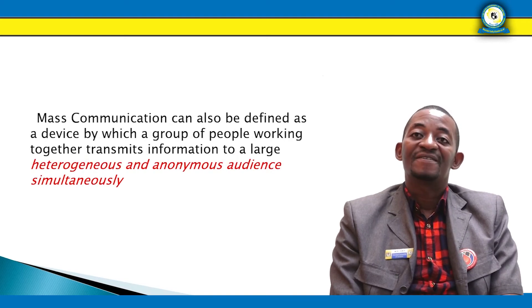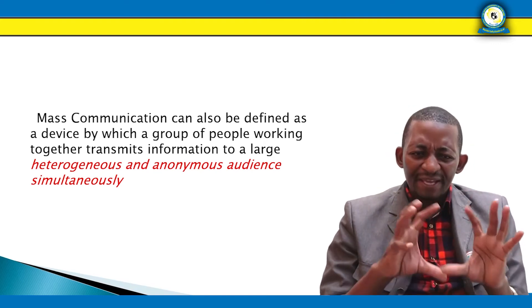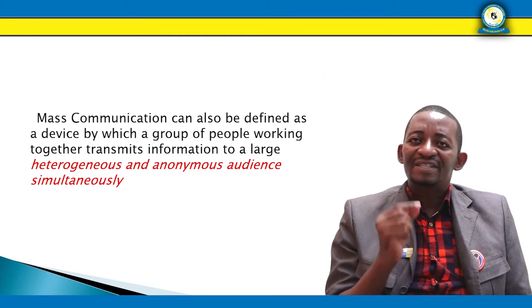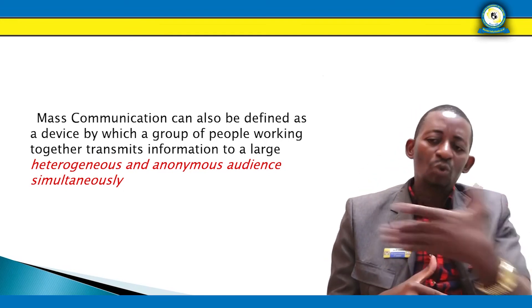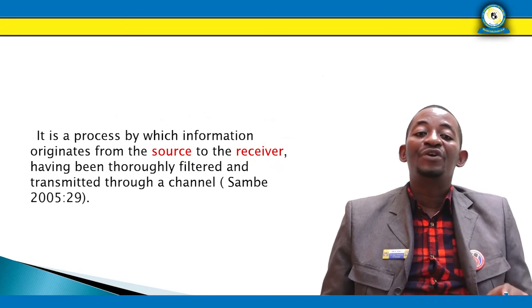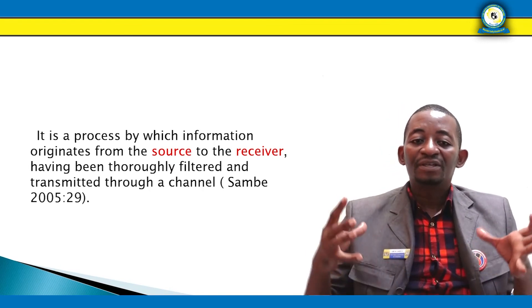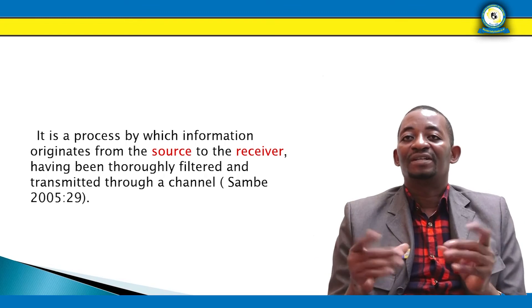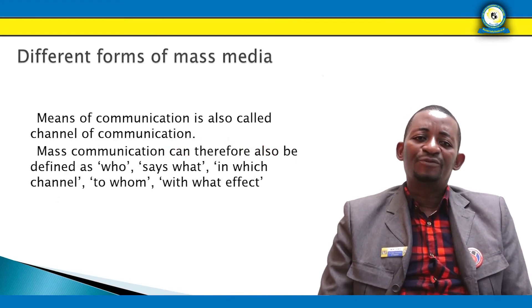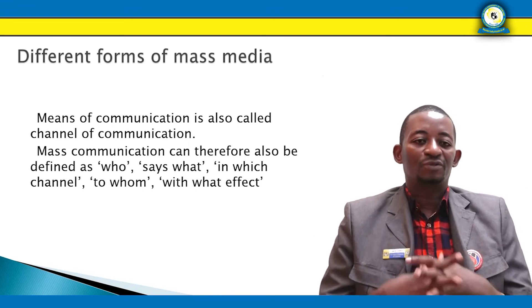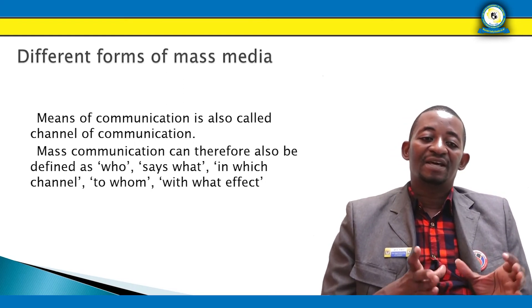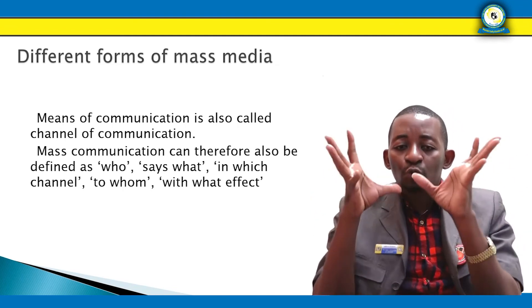Mass communication can also be defined as a device by which a group of people working together transmits information to a large, heterogeneous, and anonymous audience — the audience you don't even know, but the message cuts across at the same time. It's the process by which information originates from the source to the receiver, having been thoroughly filtered and transmitted through a channel. Mass communication can therefore also be defined as: who says what in which channel to whom with what effect.